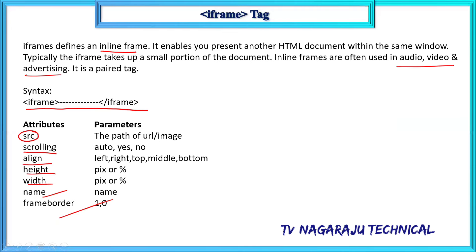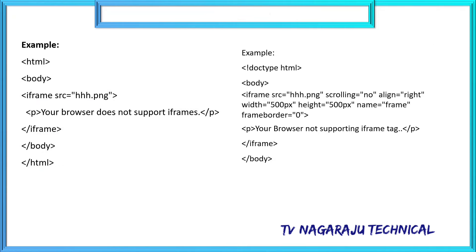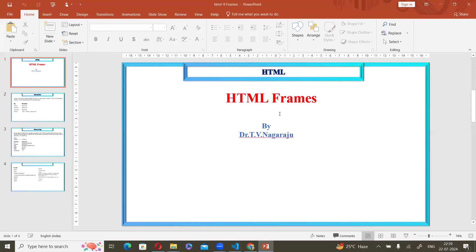To summarize: source is for content, scrolling controls scroll behavior, align accepts values like left, right, top, middle, and bottom, height and width size the frame, name is for JavaScript referencing, and frameborder — value 1 shows the border, value 0 removes it. That is iframe. Thank you.